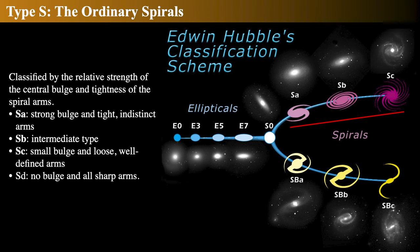Now let's get to the really pretty stuff — the ordinary spiral galaxies. Spiral galaxies come in a few flavors: SA, SB, SC, and SD. An SA will have an enormously large bulge and very tight, indistinct arms — they look a little like a lenticular, except star-forming is going on. An SB is an intermediate type with a less large bulge but much more distinct arms. An SC has a tiny bulge and loose, very well-defined arms. An SD has absolutely no bulge but lots of big spiral arms. These tend to be really pretty.